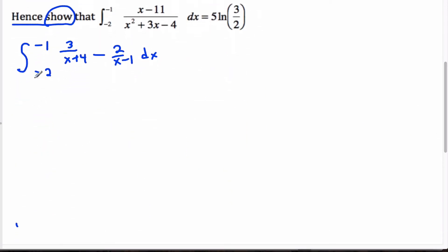And that is 3 natural log of x plus 4, definite integral, minus 2 natural log of x minus 1. And negative 2 is the lower bound, negative 1 is the upper bound. Since we're evaluating the definite integral, this is our goal.